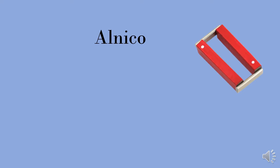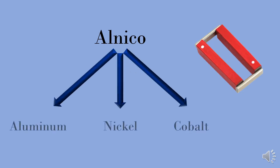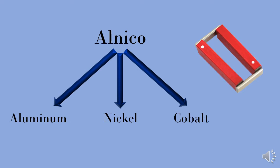Then we have a second alloy called Alnico, which is vastly used to make magnets. As you can see in the picture, this magnet is also an Alnico magnet. As the name suggests, it is made up of three elements: aluminum, nickel, and cobalt.